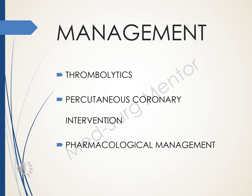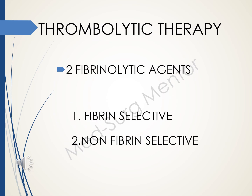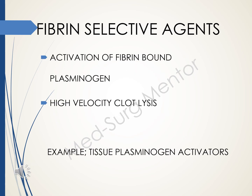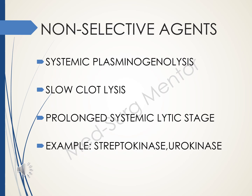The management of MI includes thrombolytic therapy, percutaneous coronary interventions, and pharmacological management. In thrombolytic therapy, there are two kinds of fibrinolytic agents: fibrin selective and non-fibrin selective. Fibrin selective agents work by activation of fibrin-bound plasminogen, causing high velocity clot lysis — an example is tissue plasminogen activator or TPA. Non-selective agents act by systemic plasminogenolysis with a prolonged systemic lytic stage — examples are streptokinase and urokinase.